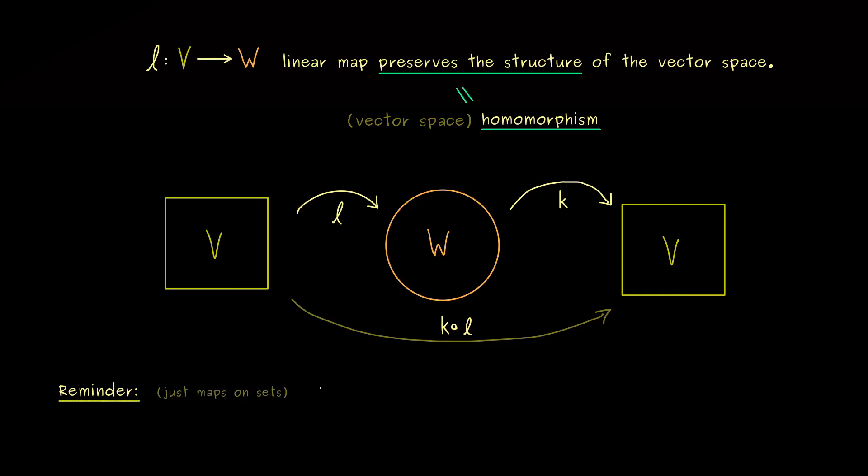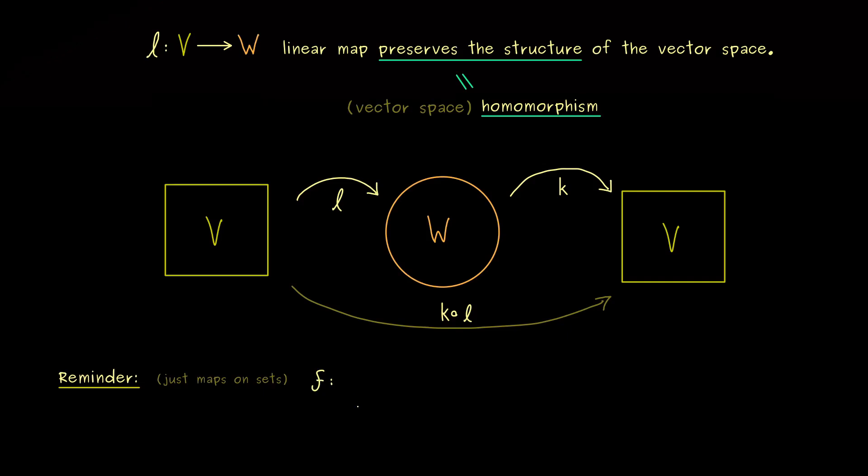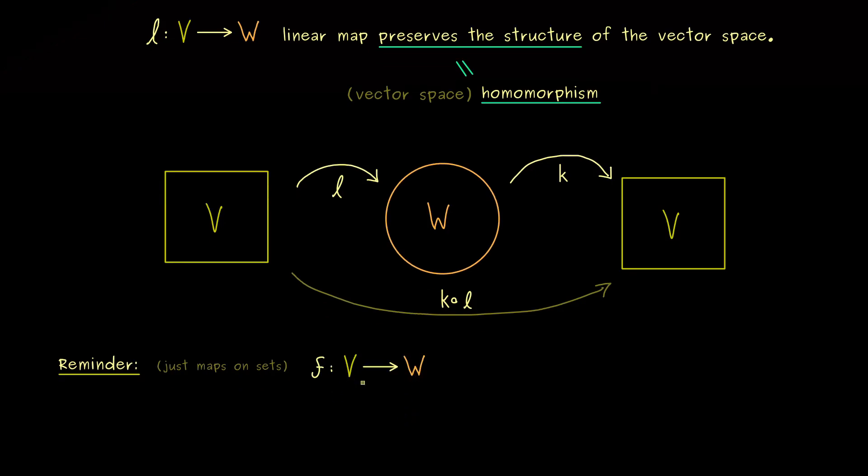So let's consider a map f that sends V to W as well. But here we don't need the vector space structure, we just need sets V and W.